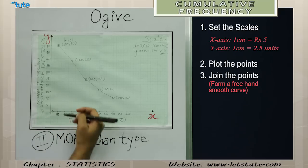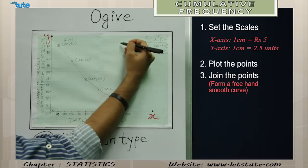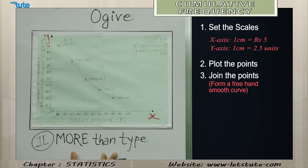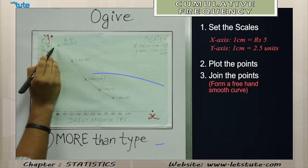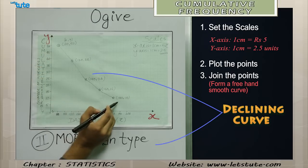In less than type we get an increasing curve, but in more than type we get a decreasing curve — this is an important distinction to remember.